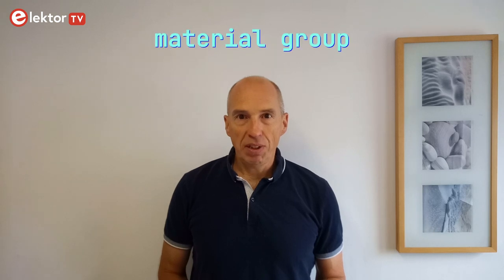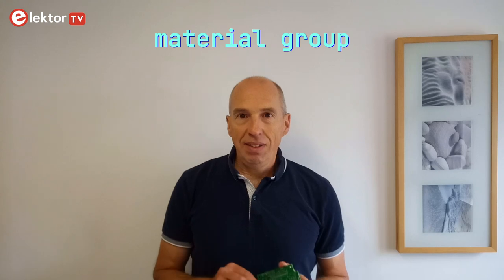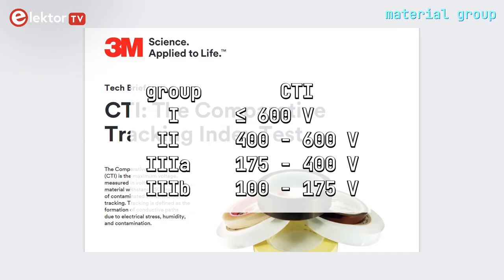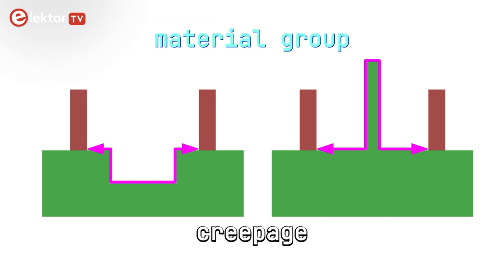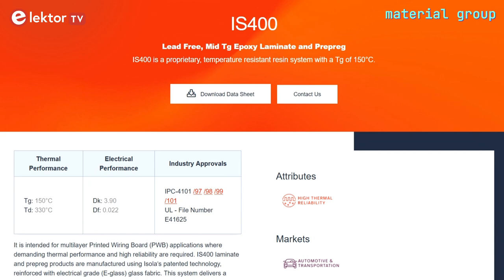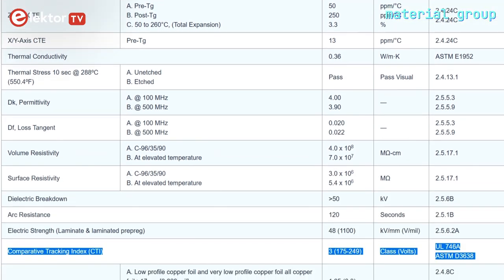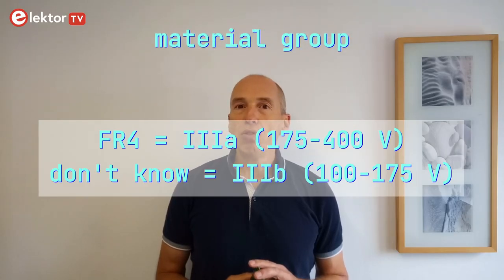Next we need to find the material group of the substrate that holds the circuit — in other words, the PCB. This is determined by the PCB's Comparative Tracking Index, or CTI. The CTI value is a measure of the electrical breakdown properties of an insulating material. We need it to determine the creepage distance, not for clearance, as creepage is over the surface and not through the air. It is specified by the manufacturer of the material. For typical PCB FR4 substrate and its variants the material group is 3A, but make sure to check this with your PCB supplier. If you don't know the value you must assume material group 3B.